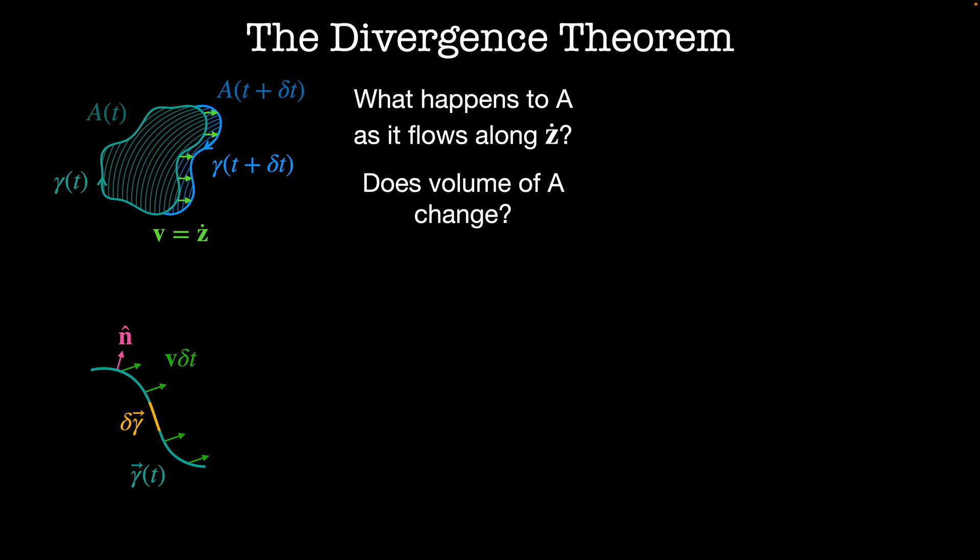To calculate the change in area as we change gamma, let's look at the volume of this infinitesimal area element. The volume of this area element dA is equal to the surface normal dotted into the vector v times delta t, which is the projection of the flow direction into the surface normal. That's the bit of the flow that's perpendicular to delta gamma. Then we multiply it by delta gamma to get the total area of this little patch. Now if we want to look at the change in area of the whole patch, we need to integrate this over the entire path gamma. So the change in area is the integral along gamma of the surface normal dotted into the velocity field times delta t.